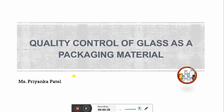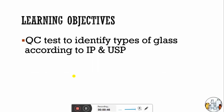Hello everyone, welcome to my channel. Today's topic is quality control of glass as a packaging material. After going through this video, learners will be able to understand quality control tests to identify the type of glass according to IP and USP, that is Indian Pharmacopoeia and United States Pharmacopoeia.